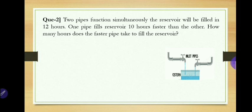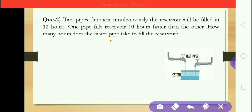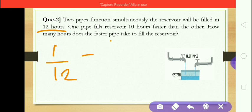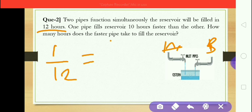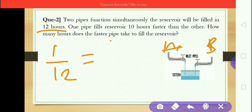The second problem: two pipes functioning simultaneously will fill a reservoir in 12 hours, so the part filled by both pipes in one hour is 1/12. One pipe fills the reservoir 10 hours faster than the other. Suppose the faster pipe takes x hours; then the slower pipe takes x plus 10 hours, because the slower pipe takes more time than the faster one.